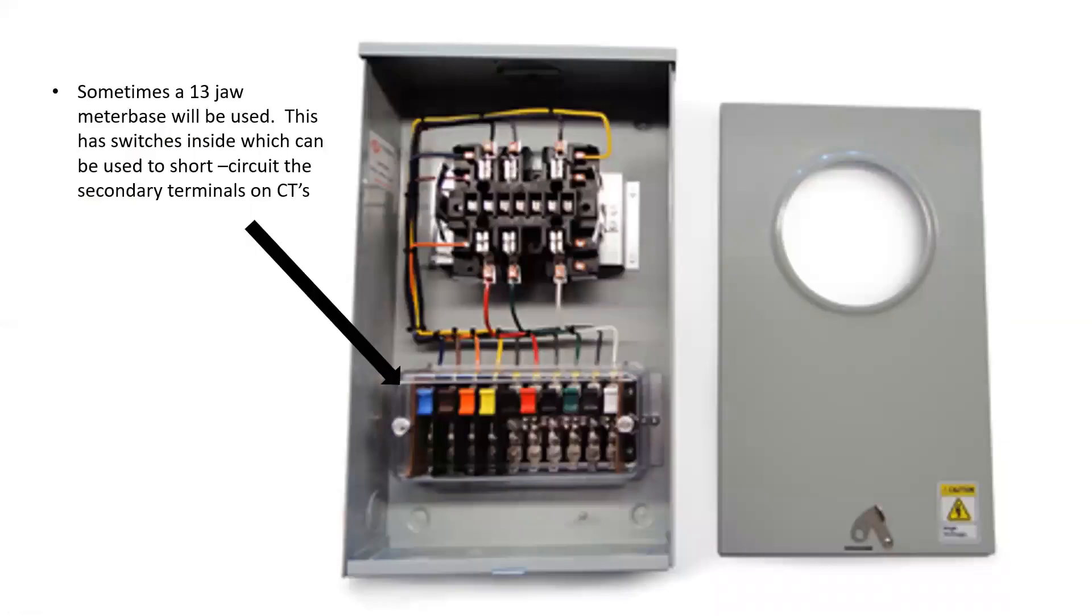Sometimes, what we're going to have is what's called a 13-jaw meter base. And a 13-jaw meter base is used because it has test switches in it. Now, it can be used with PTs and CTs, but what's helpful with CTs is that the test switches can be operated to short-circuit the CT from the meter base location, as opposed to actually opening up the CT cabinet and physically touching and moving items while they're still current flowing on the primaries. So, this can be a safer alternative.